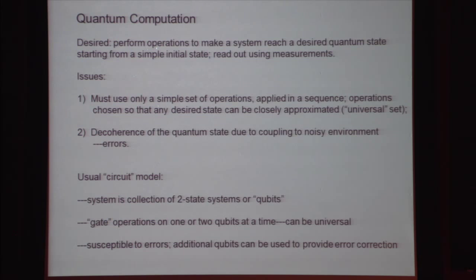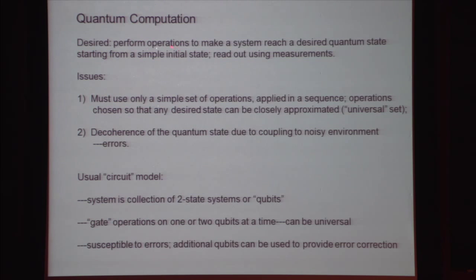I should add something about topological quantum computation since it's closely connected with all of these things. In quantum computation, we perform operations on a quantum system, starting from some initial state, doing operations, and reaching some desired quantum state — usually as a unitary evolution followed by measurements to read out the final state. We usually want a simple set of gate operations which we can use in a sequence to closely approximate any desired unitary operator — what we call a universal set of gate operations. The danger is decoherence due to coupling to noise.